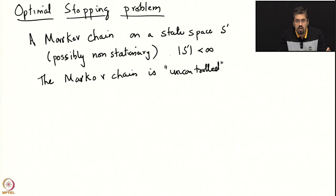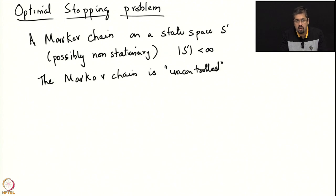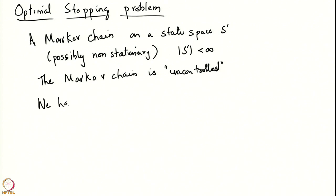When do we step in and stop its evolution? We have essentially two options at every time step. We have the option to let it continue to the next time step based on its own evolution, or we have the option of saying quit and stopping the Markov chain. So the actions are either continue or quit.